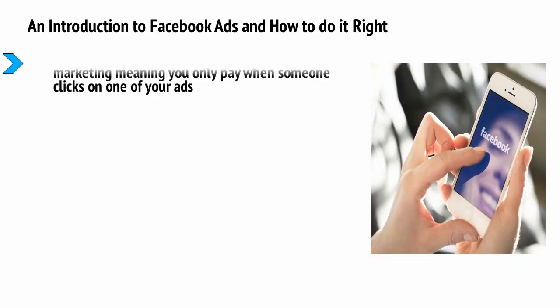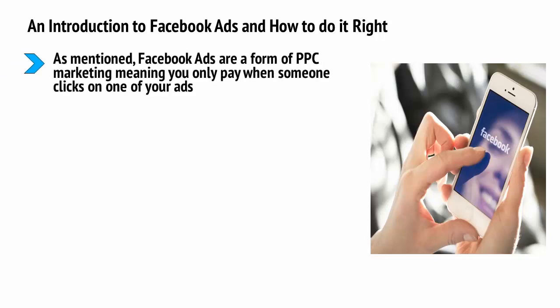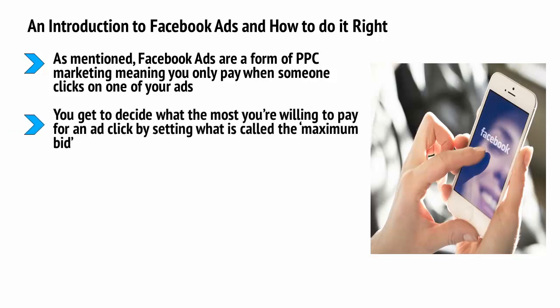Let's start with Facebook ads. Facebook ads are a form of PPC marketing, meaning you only pay when someone clicks on one of your ads. Facebook ads will appear on Facebook, thereby giving you the opportunity to advertise to anyone who uses the social media platform. You get to decide the most you're willing to pay for an ad click by setting what is called the maximum bid.